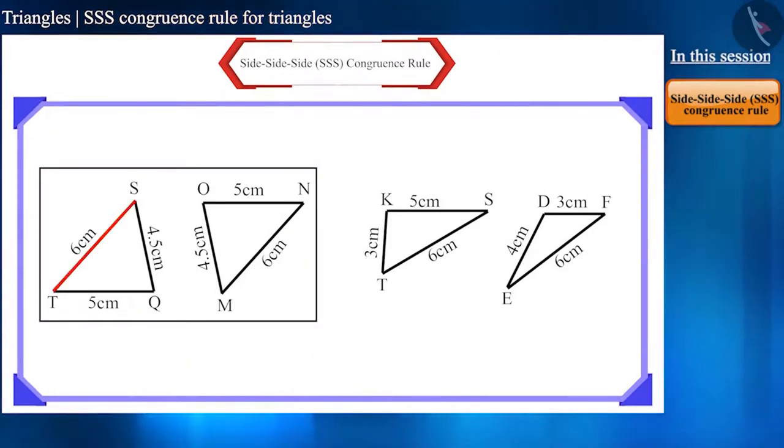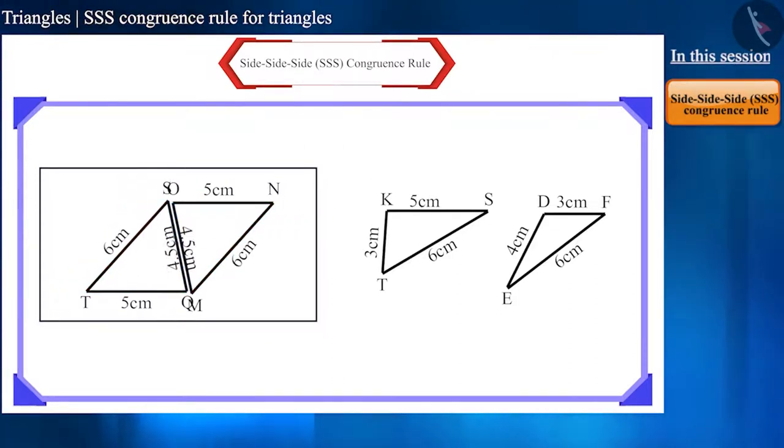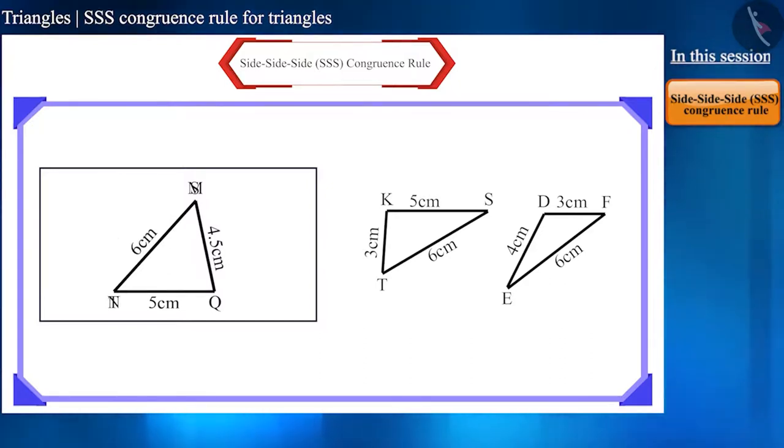Observe the first pair. The three sides of the first triangle are equal to the three sides of the other triangle. That's why they are covering each other completely. Therefore, these triangles are congruent.